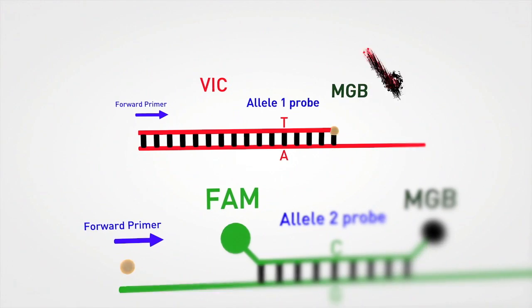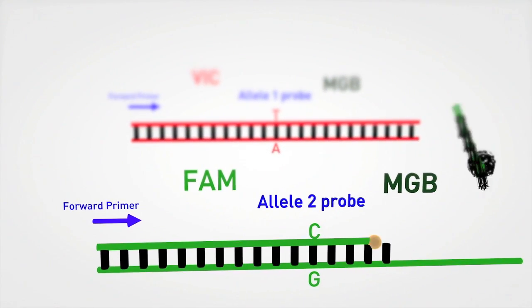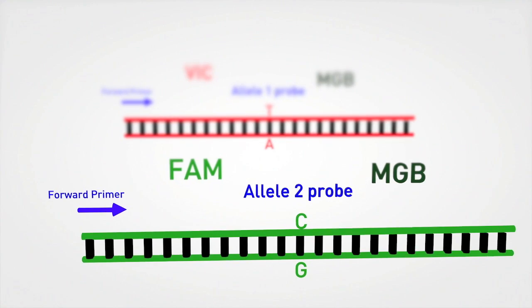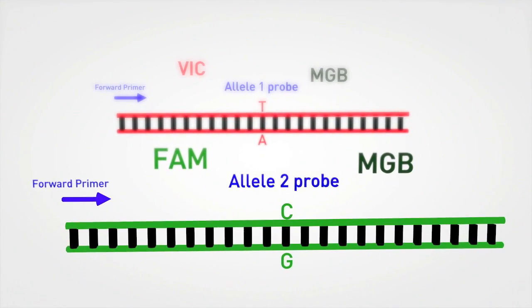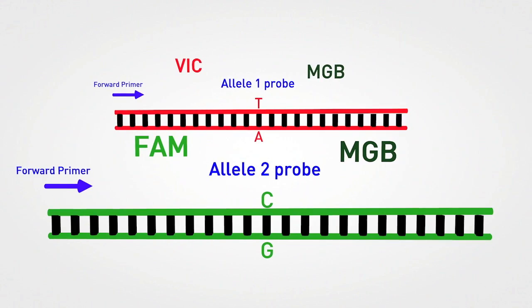In the example shown, the presence of allele 1 is detected by VIC signal emission due to cleavage of the allele 1 probe. Similarly, the presence of allele 2 is detected by FAM signal emission due to cleavage of the allele 2 probe.